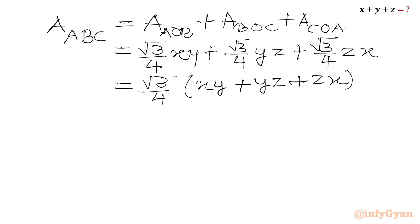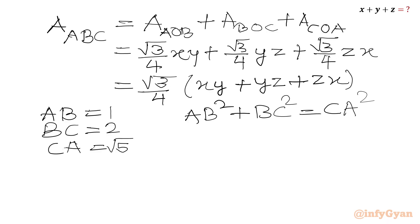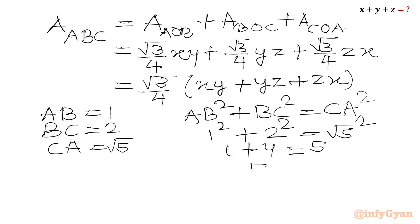The side lengths of triangle ABC are: AB = 1, BC = 2, CA = √5. Checking the Pythagorean theorem: AB² + BC² = 1² + 2² = 1 + 4 = 5 = (√5)² = CA². This is true, so triangle ABC is a right-angle triangle.